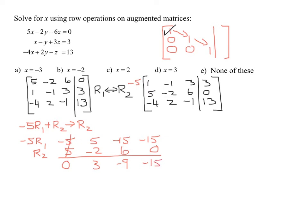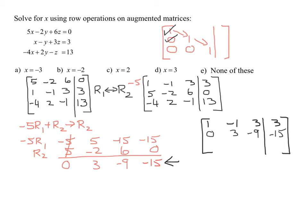Now we write our new matrix. Row 1 stays the same since we're happy with the 1 at the top-left position. The new row 2 is 0, 3, negative 9, and negative 15. So now we have our 0 below the 1. The next step is to get a 0 below that as well, in row 3. We multiply the 1 by the opposite of negative 4, which is positive 4.